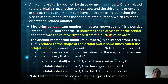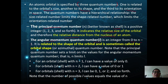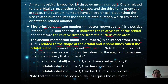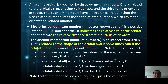The next number is called the angular momentum quantum number, l, which is an integer starting from zero to n minus one. It is related to the shape of orbitals and is sometimes called the orbital shape or azimuthal quantum number. The principal quantum number sets limits on the value of the angular momentum quantum number — n limits l.